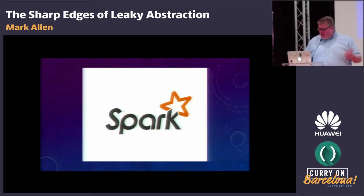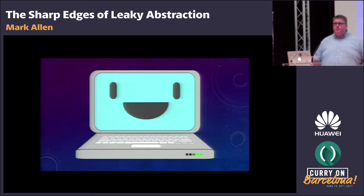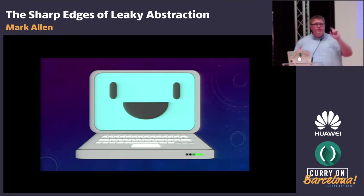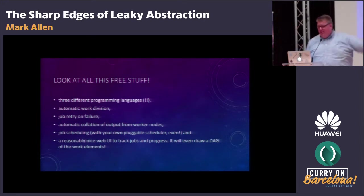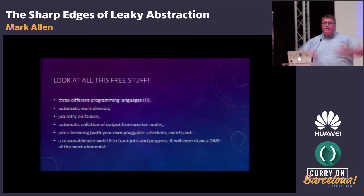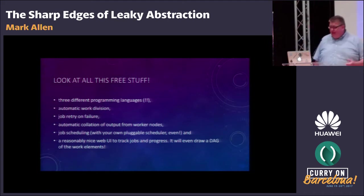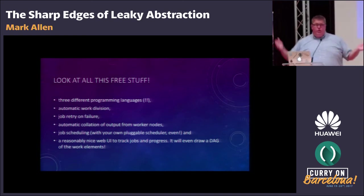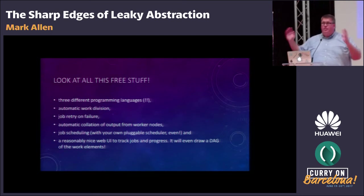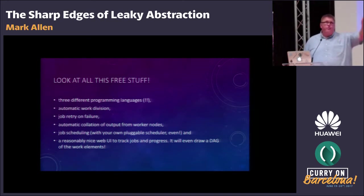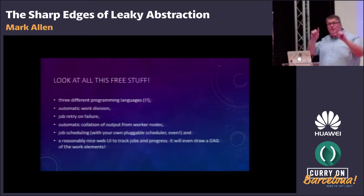Look at all this free stuff. You can program Spark in three different languages: Python, Scala, and R — I'll throw in Java for free, so four languages. It automatically partitions work, does job retries when the job fails, automatically collates output from worker nodes, does job scheduling, and it's pluggable — you can plug in your own scheduler. You can run it on thousands of nodes. It even has a reasonably nice UI that'll tell you you're on segment 69 of 3,492, and it'll draw you a nice DAG with 3,492 edges, which is completely incomprehensible. But it does it.